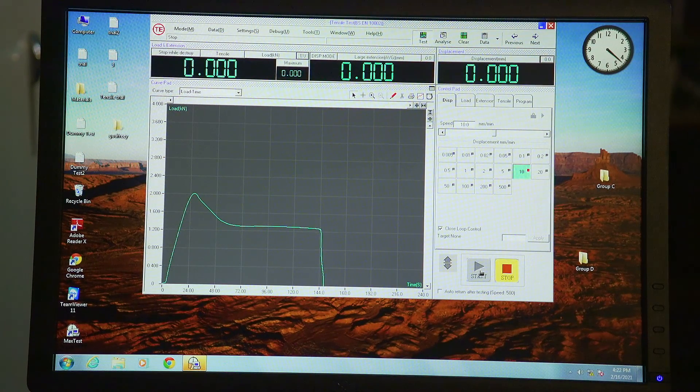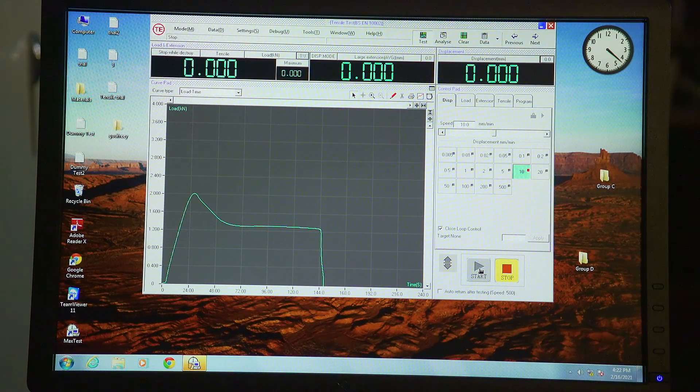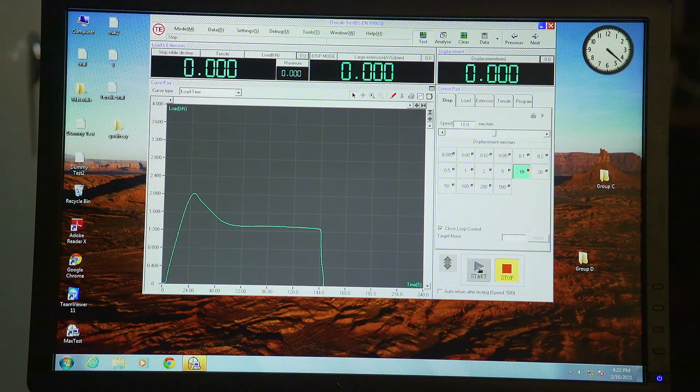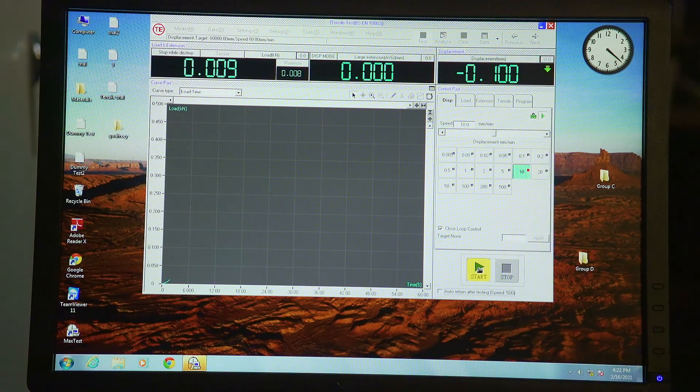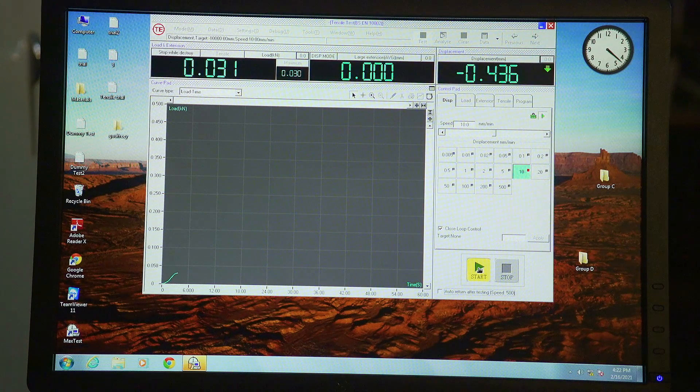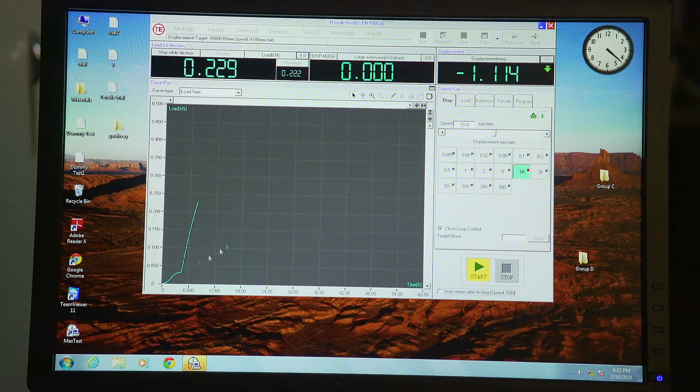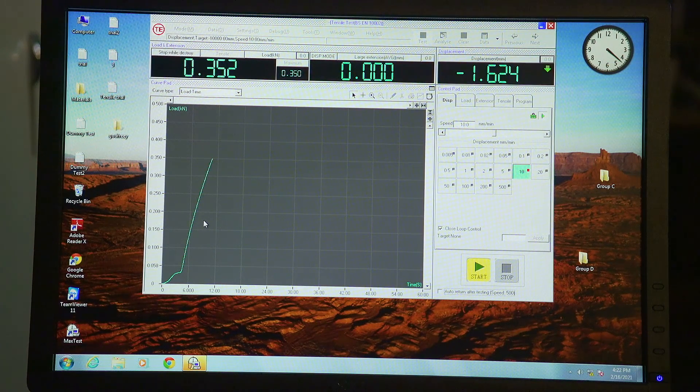I will now start the test on the HDPE sample to show you the difference in behavior between the HDPE and the PVC. As you can see, similar to the PVC, the HDPE also exhibits a linear behavior at the beginning of the test.